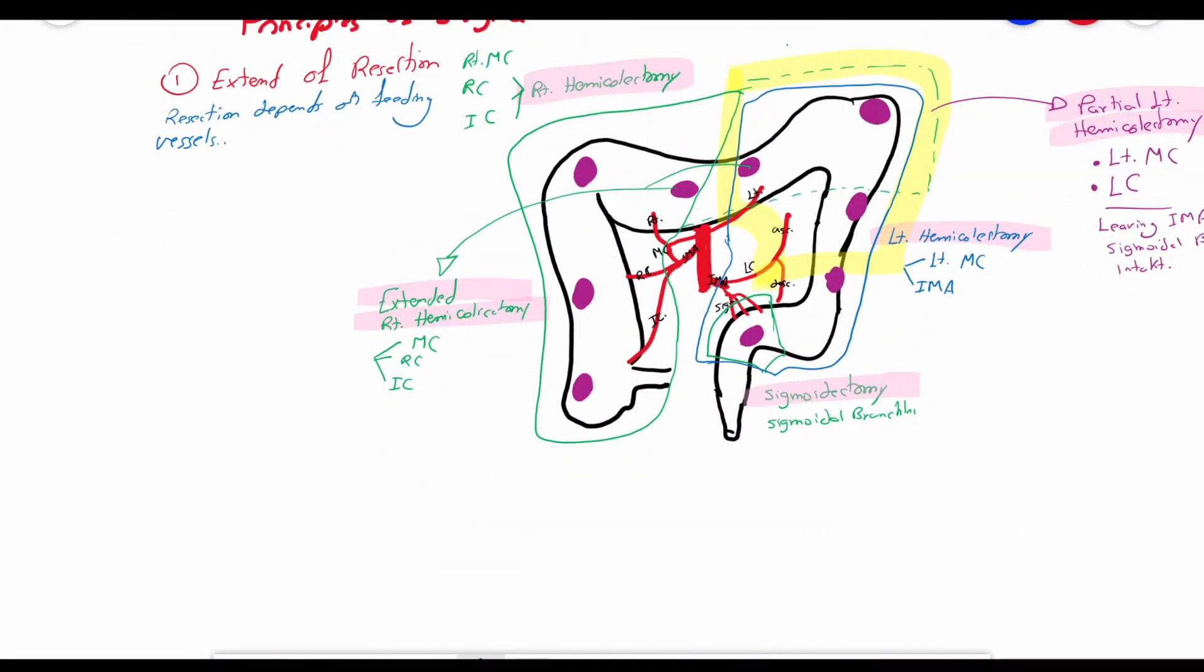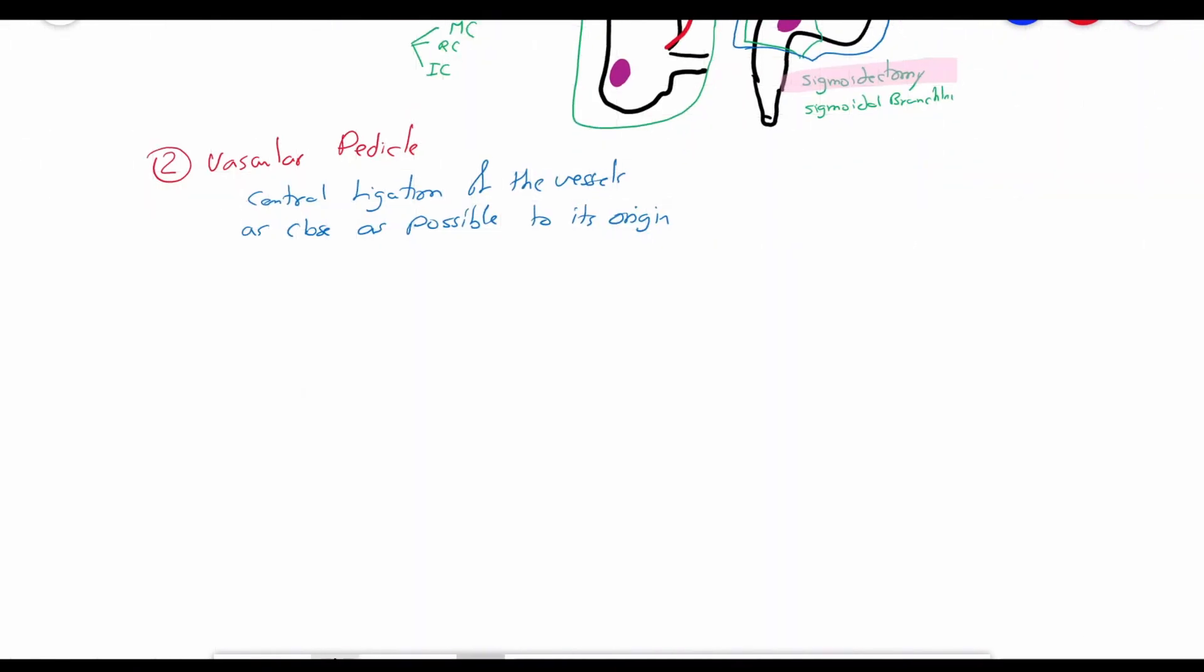The second rule is the central ligation of the vascular pedicle as close as possible to its origin. The third rule addresses the lymph node harvest. At least 12 lymph nodes should be harvested in the specimen in order to evaluate the end stage of the tumor. This includes the paracolic lymph nodes, mesenteric lymph nodes, and central lymph nodes, along with any suspicious lymph nodes.